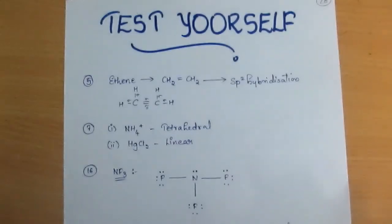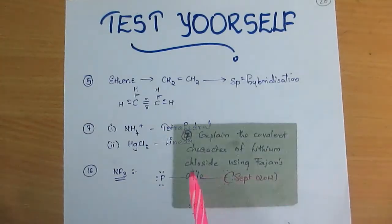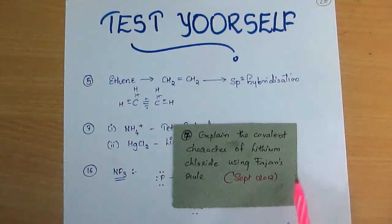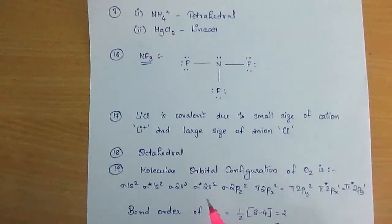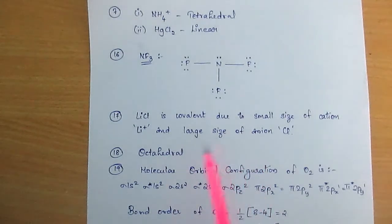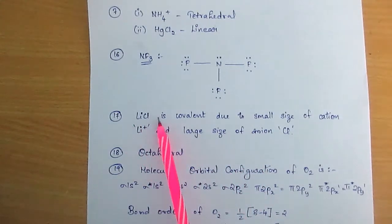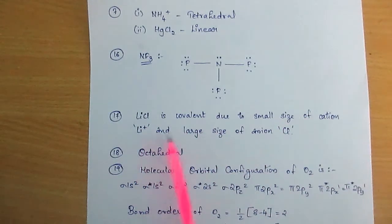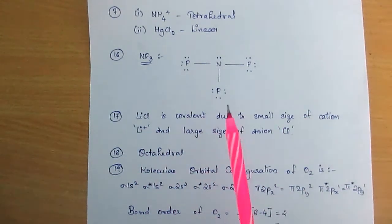The 17th question, asked in September 2012: explain the covalent character of lithium chloride using Fajans rule. Using Fajans rule, lithium chloride is covalent due to the small size of the cation and large size of the anion.